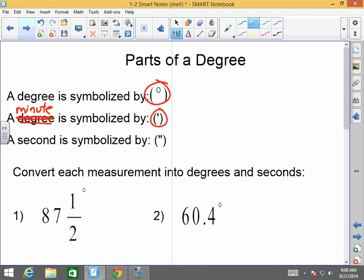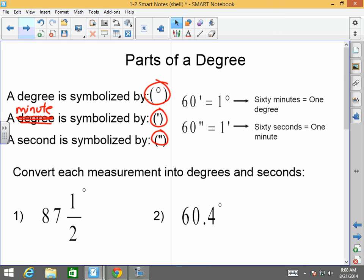And a second, like a second, is symbolized by kind of a quotation. All right? And this is very mathematical. What happens here is 60 minutes equals 1 degree. And 60 seconds equals 1 minute.